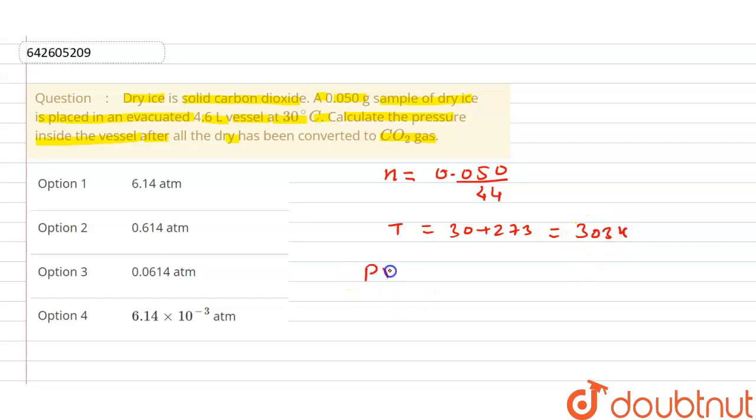So PV is equal to nRT. All these values we know now. Now put all these values. Basically we have to find the pressure, so pressure will be equals to nRT by V. So number of moles is 0.05 divided by 44.